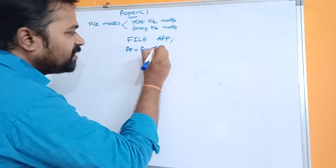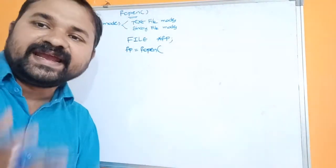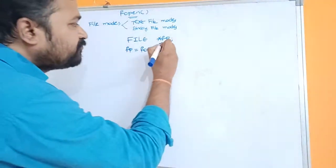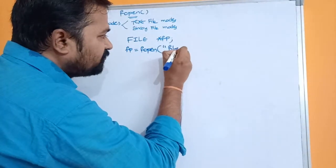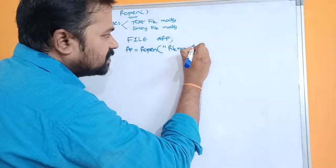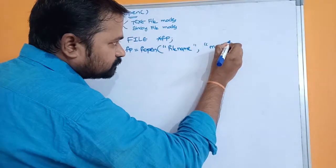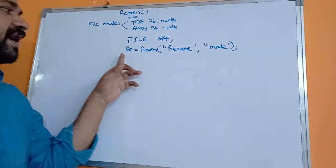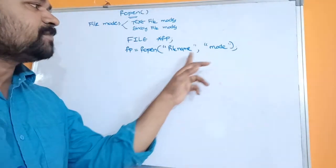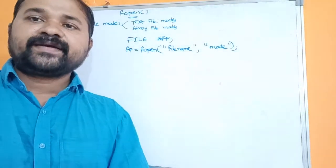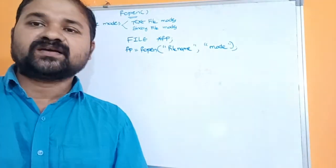The fopen function is useful in order to open a file for reading or writing data. The fopen function accepts two arguments. The first argument is the file name with extension, and the second argument is the mode within double quotations. So the syntax is: file pointer = fopen("filename", "mode").